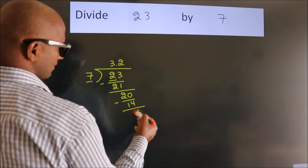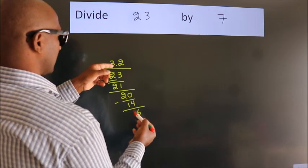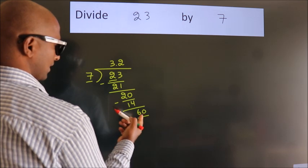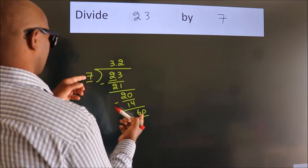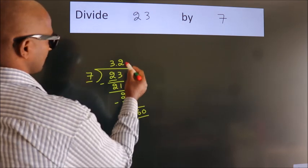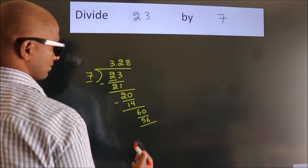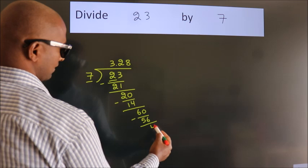After this, we already have the decimal, so directly take 0. So, 60. A number close to 60 in the 7 table is 7 eights, 56. Now we subtract. We get 4.